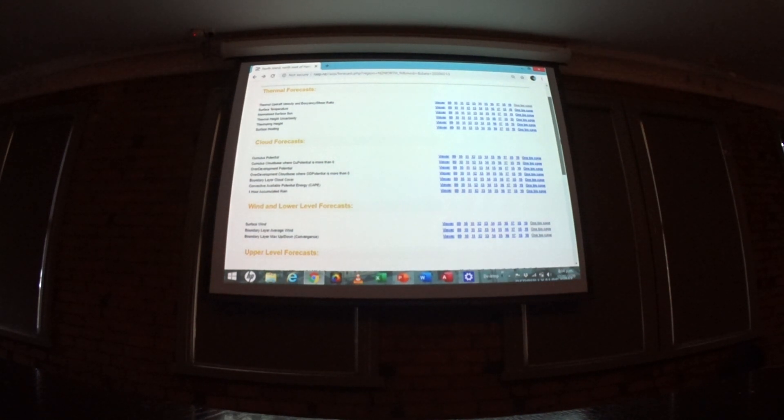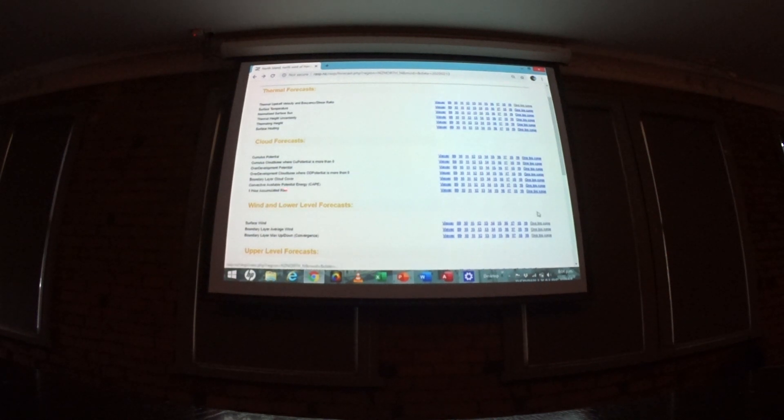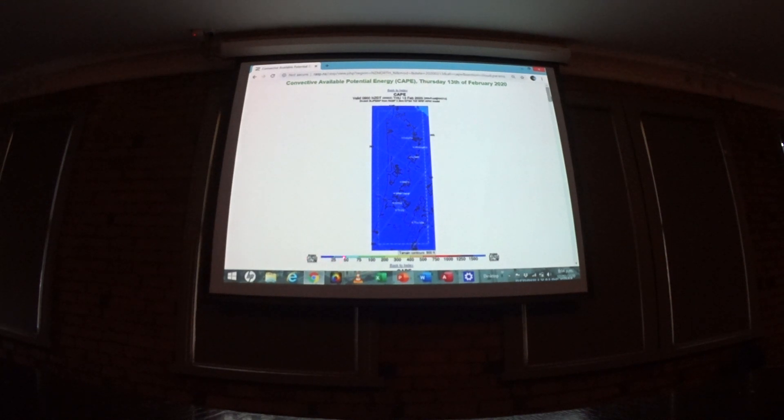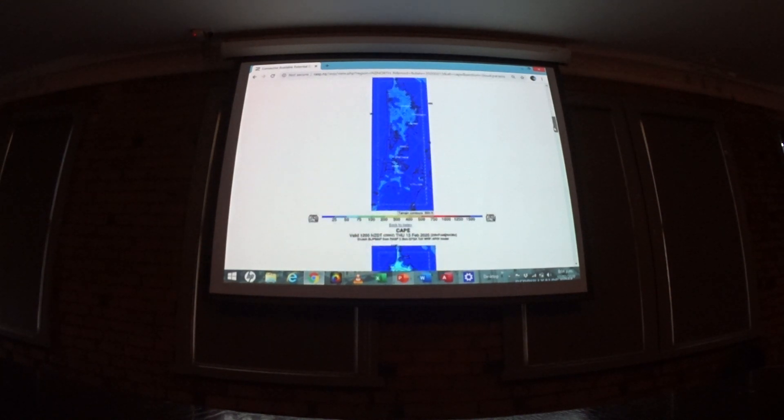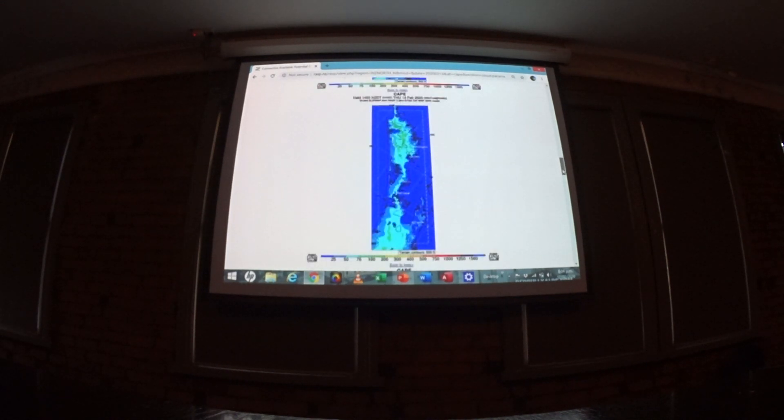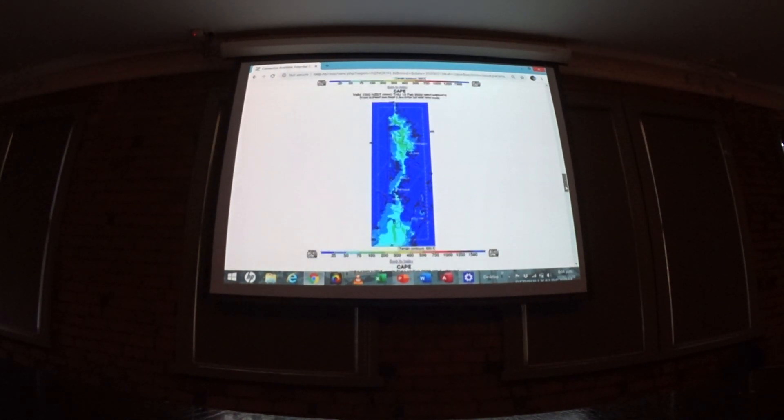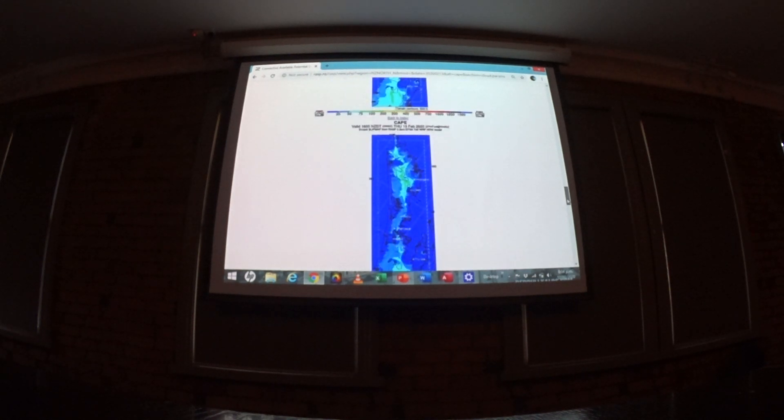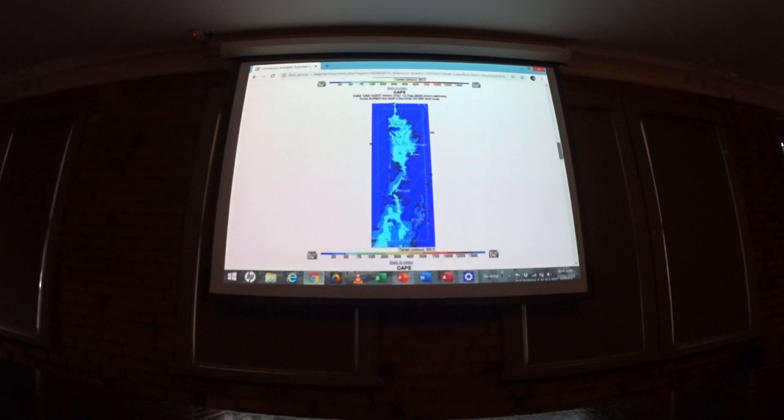This is the CAPE, the convective available potential energy corner of the cloud forecast. It's way down here, blue, nothing to worry about. Still blue. Pretty low, we were going to be flying blue stuff.